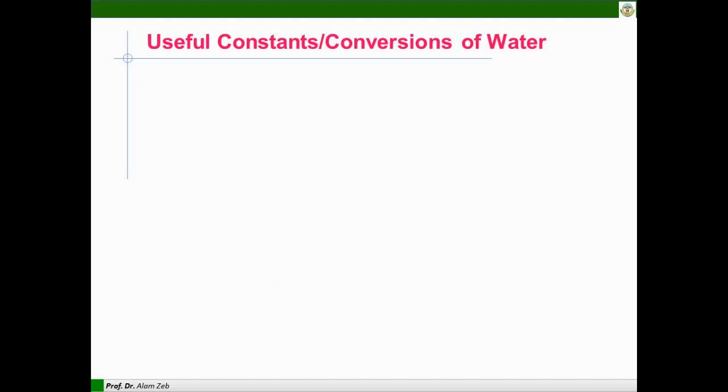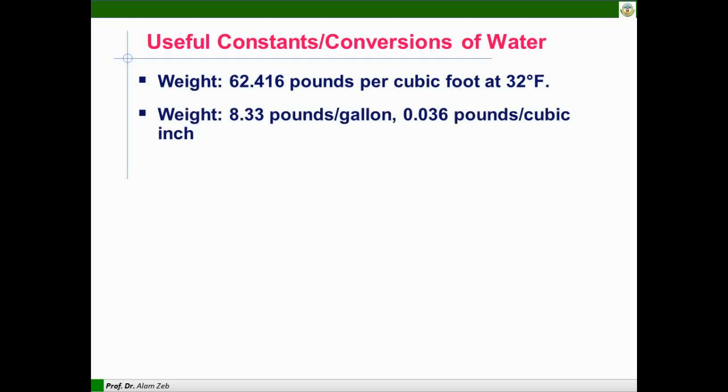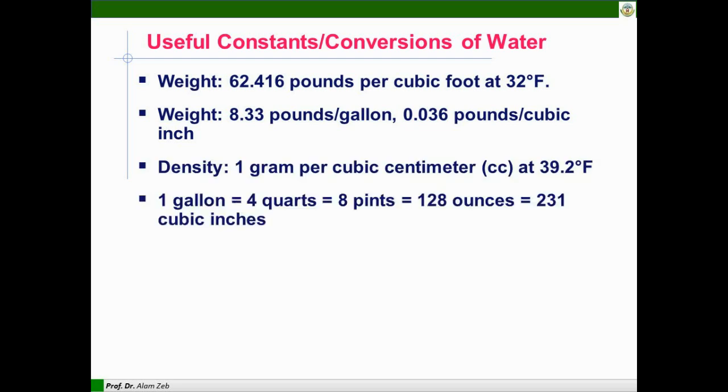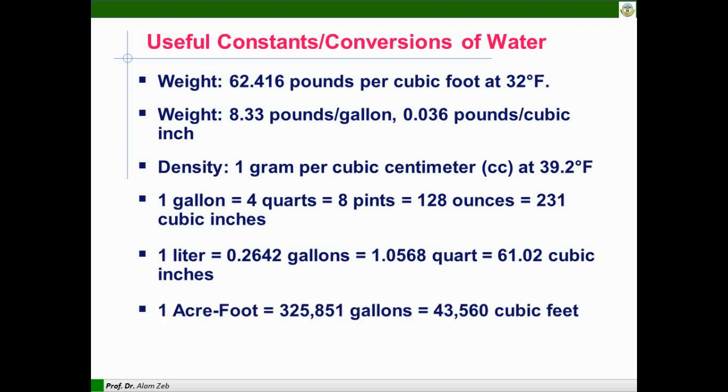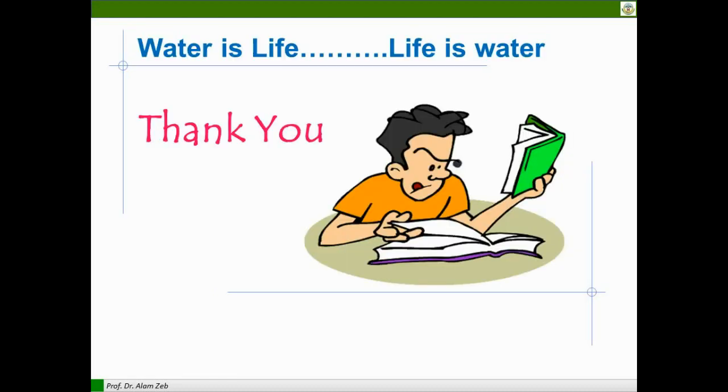A useful constant or conversion of water that we need: the weight is 62.41 pounds per cubic foot at 32 degrees Fahrenheit. Weight is 8.3 pounds per gallon. Density is one gram per cubic centimeter. Generally, one gallon equals four quarts, which equals eight pints, which equals 128 ounces. One liter equals this amount.